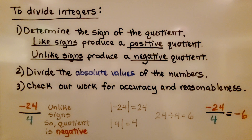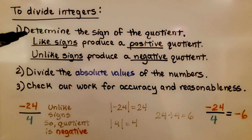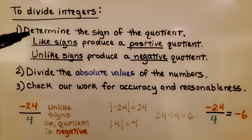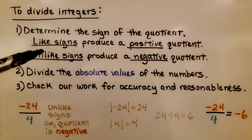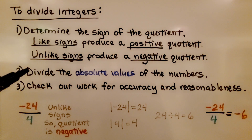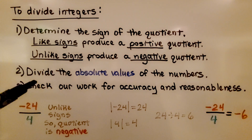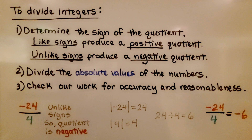So this is what we do to divide integers. The very first thing we do is determine the sign of the quotient. If they have like signs, they'll produce a positive quotient. If there are unlike signs, they'll produce a negative quotient. Then we divide the absolute values of the numbers, and we check our work for accuracy and reasonableness.